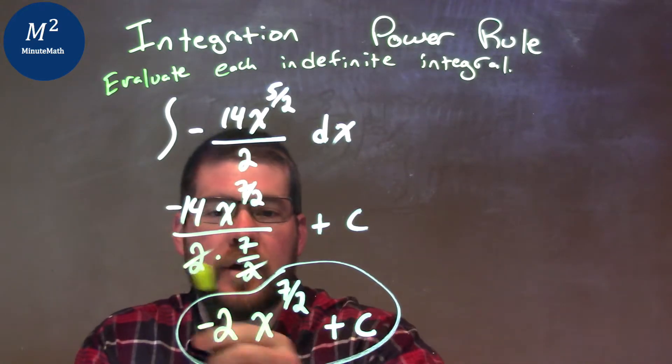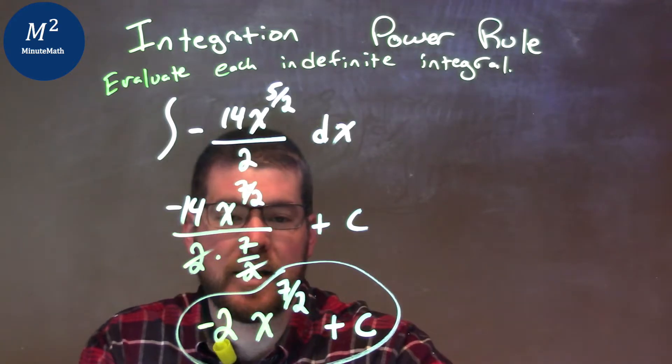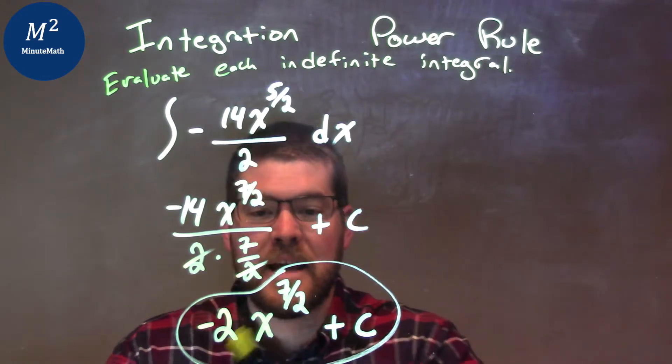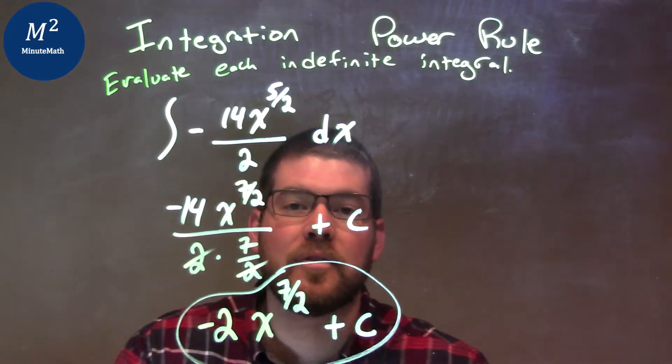Now, the 2's cancel. Simplify there. 2 and 2. And then 7 and 14 gives us our negative 14 is a negative 2 out front. So, we'll bring everything else down. And our final answer, again, is negative 2x to the 7 halves power plus c.